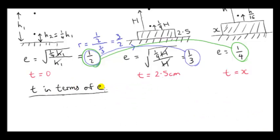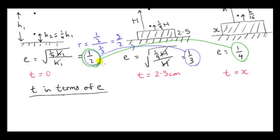A better way to approach this problem is to look for a formula giving t, the thickness, in terms of e rather than in terms of a reduction factor. We want to be able to predict what value of e we will get for a given thickness of paper — that's a much more useful formula. So we'll consider the general case, where the base case is e equals one half when t is 0.